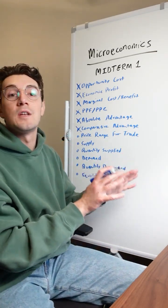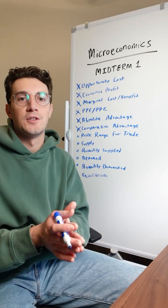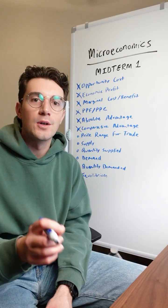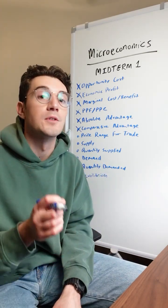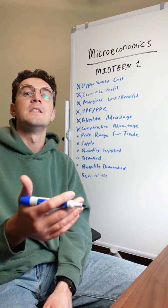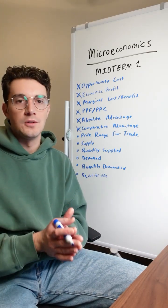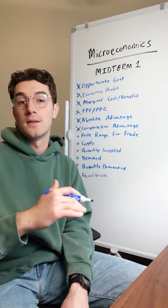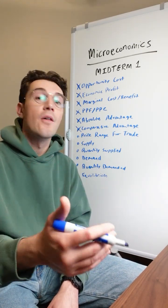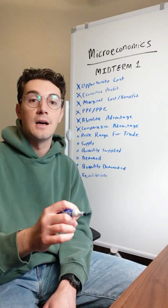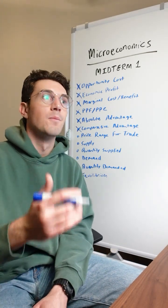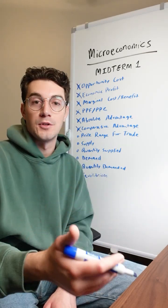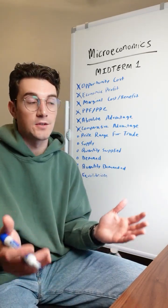For price range for trade in these types of problems, your professor might ask what prices both parties would accept a deal at. Always look for prices that fall on or within the opportunity cost for both parties. If you have the lower opportunity cost for a good, you're going to be the one specializing in it and selling it, so that serves as the floor for eligible prices. For the other party — the buyer — their opportunity cost is above yours and they're not going to pay more than that opportunity cost for the good, so the other party's higher opportunity cost serves as the ceiling for eligible prices for trade.